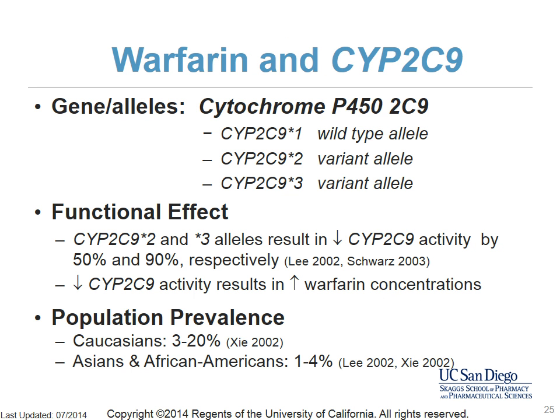The wild type or reference allele is CYP2C9*1. Polymorphisms have given rise to the CYP2C9*2 and *3 alleles. The wild type CYP2C9*1/*1 genotype results in normal clearing of S-warfarin, while carriers of either CYP2C9*2 or *3 have impaired metabolism of S-warfarin, increasing drug concentration. About 3 to 20 percent of Caucasians carry one of these alleles, while only 1 to 4 percent of Asians are carriers. Other alleles such as *5, *6, *8, and *11 also exist but are much rarer.